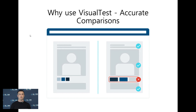Some companies might wonder why they would use Visual Test. Most companies assume visual testing is not necessary when functional tests are being run. However, functional tests only check whether the software works as intended — they do not check if the software looks as it should. Both are critical aspects of the software development life cycle. The UI is usually the first thing end users see, and it's important to make sure your application looks and works as intended, which has a huge impact on user experience.